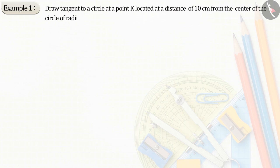Draw tangent lines to the circle at a point K located at a distance of 10 cm from the center of the circle of radius 5 cm.